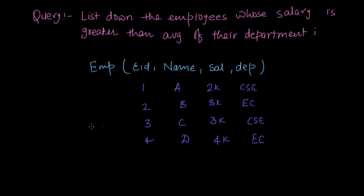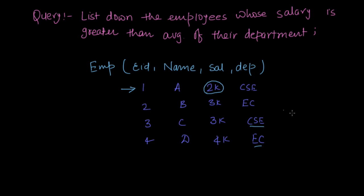We have to list all employees whose salary is greater than the average salary of their department. Let's say we have a database instance with four records in the Employee table, and the employees belong to only two departments: CSE and EC. When I take the first record — eid1, name A, salary 2k, department CSE — I have to compare whether this 2k salary is greater than the average salary of CSE.